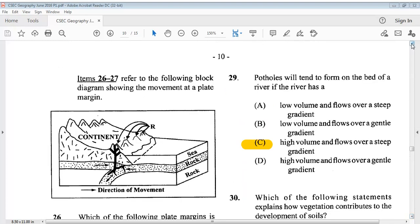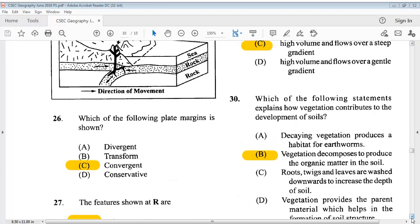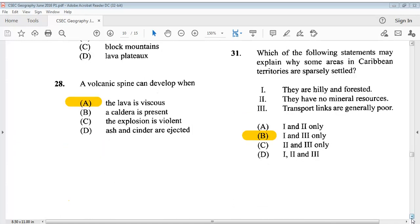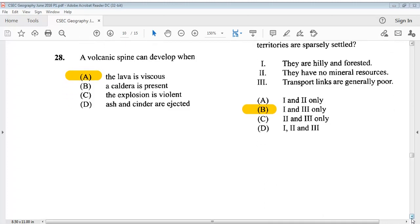Question 29 says, potholes will tend to form on the bed of a river if the river has a? The most suitable answer is C, high volume and flows over a steep gradient. Question 30 says, which of the following statements explains how vegetation contributes to the development of soils? The answer is B, vegetation decomposes to produce the organic matter in the soil. Question 31: Which of the following statements may explain why some areas in Caribbean territories are sparsely settled? 1, they are hilly and forested. 2, they have no mineral resources. 3, transport links are generally poor. The answer is B, 1 and 3 only.